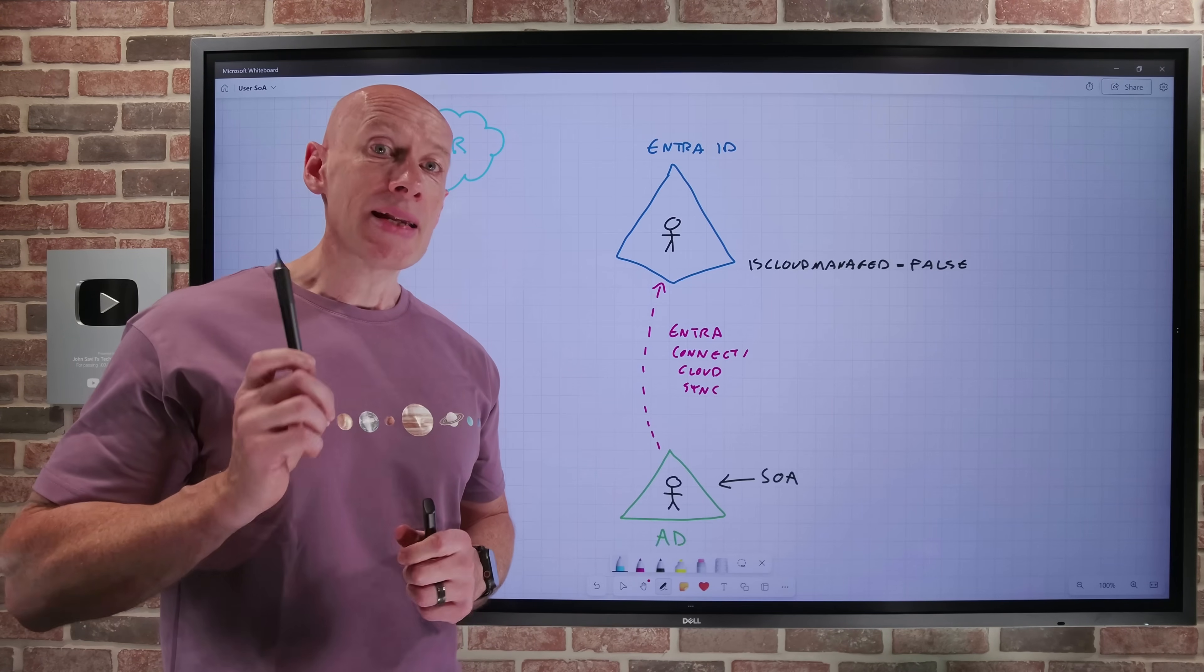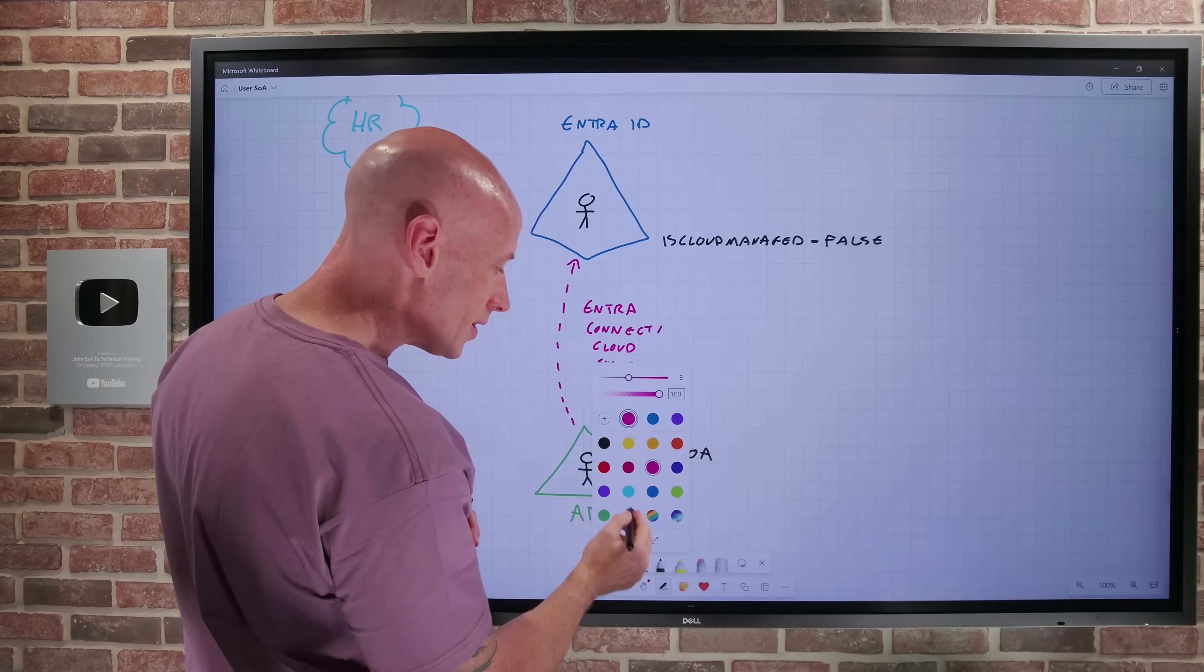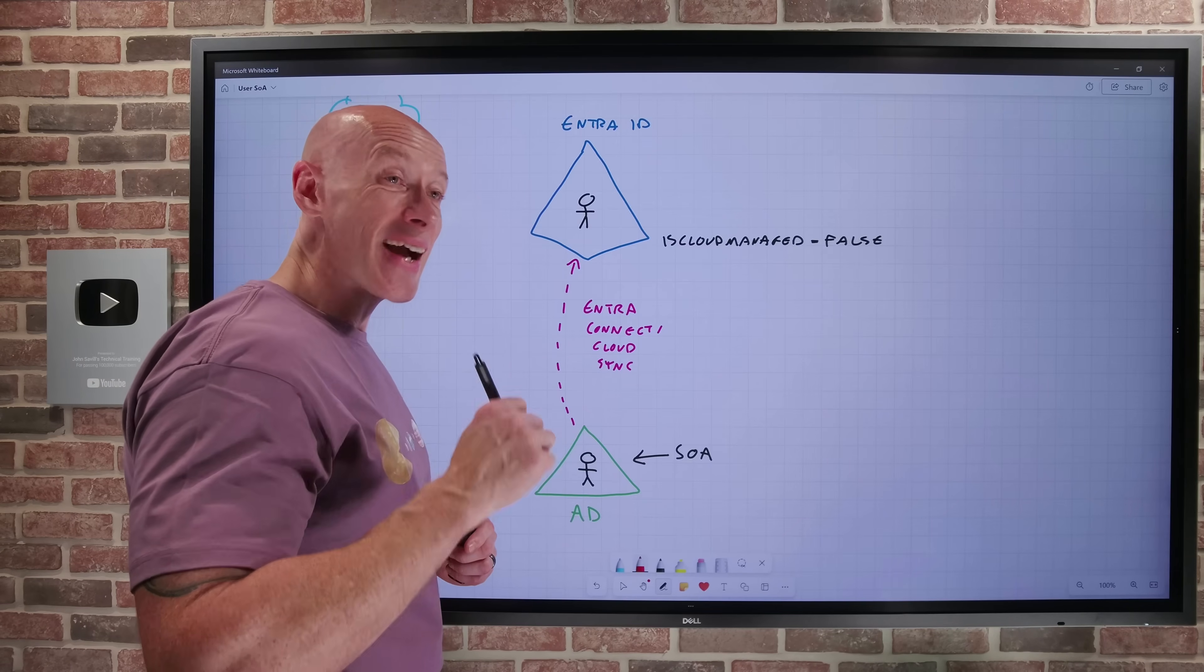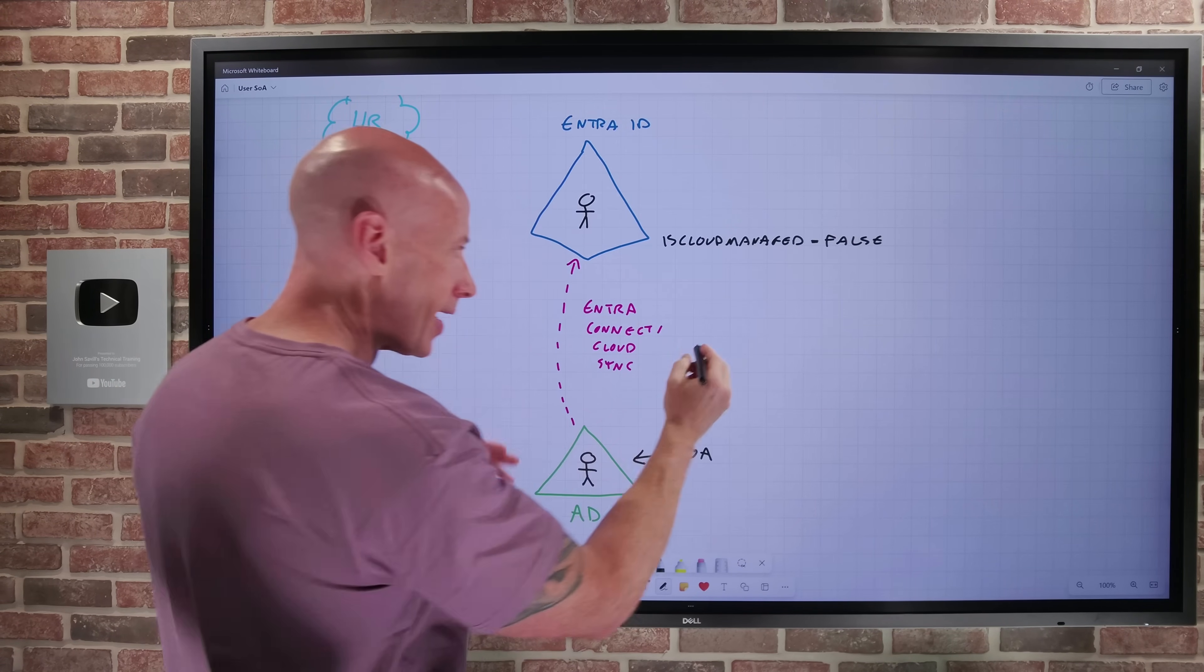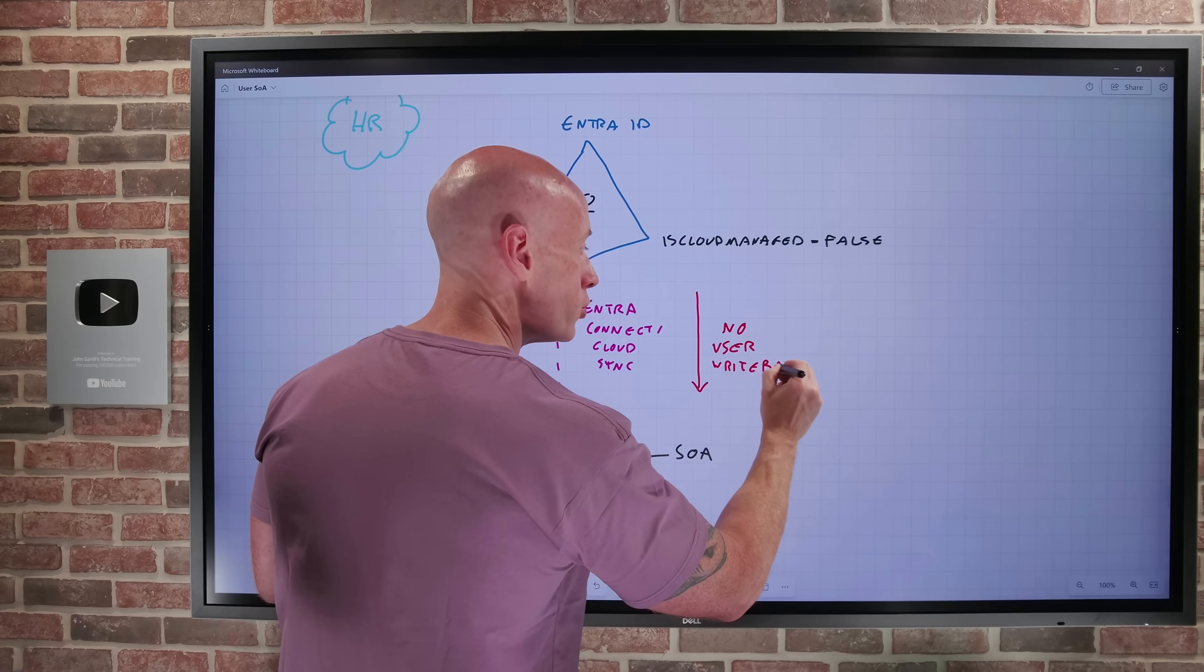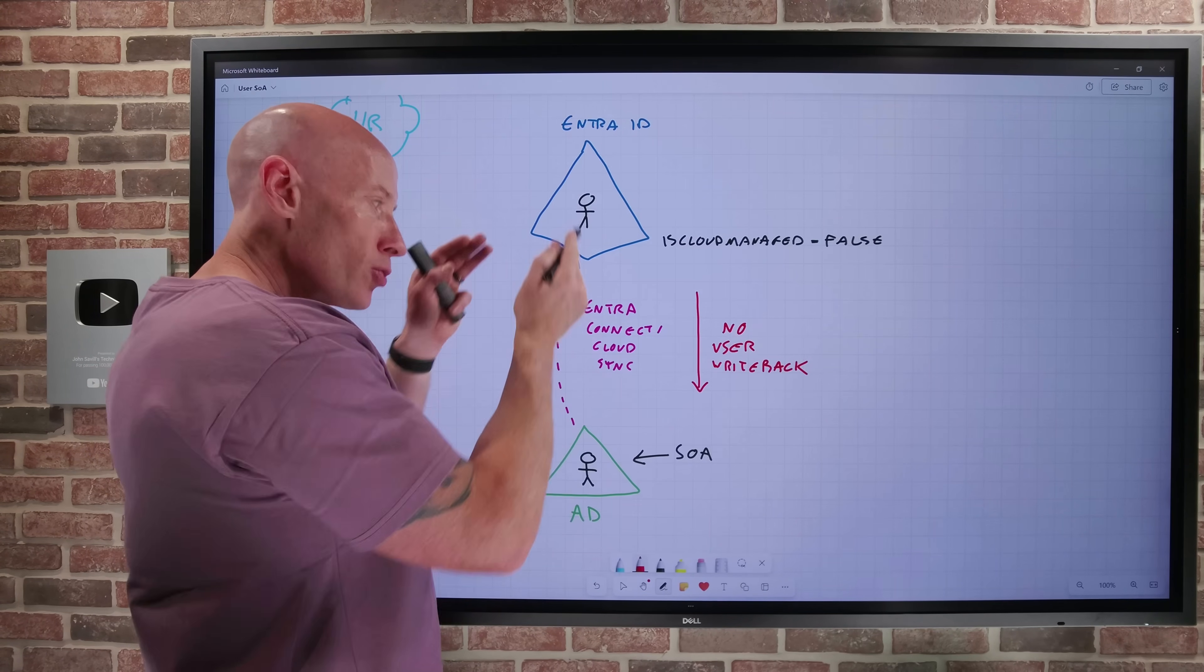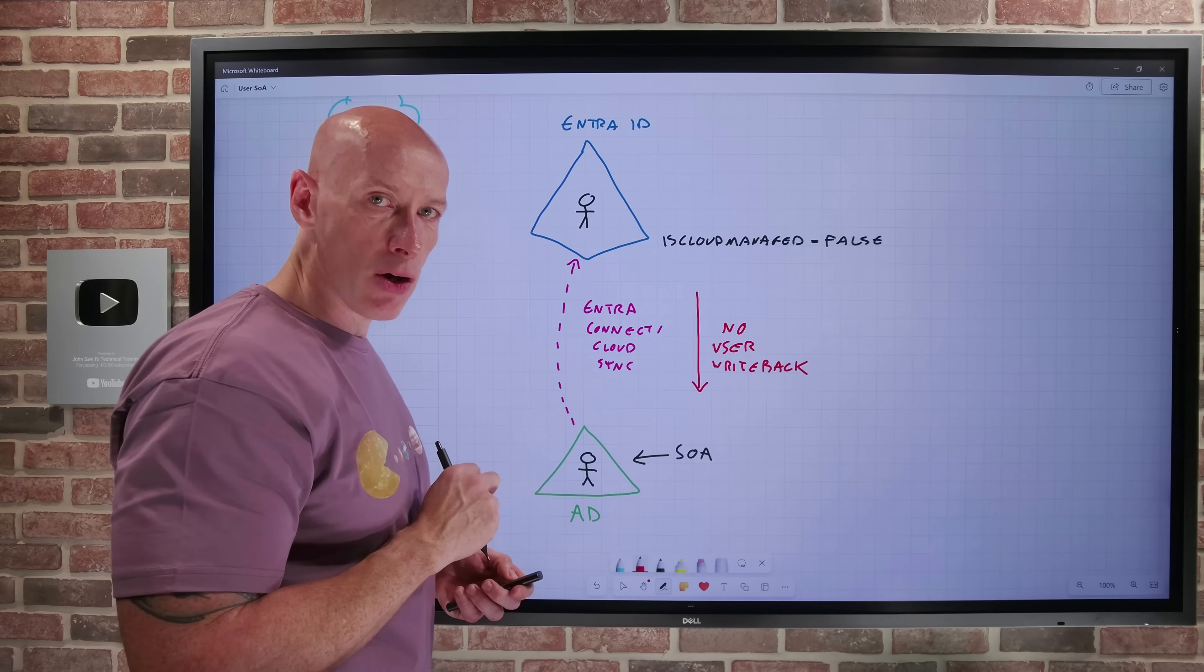One important thing to understand though, is when we go ahead and we're going to make this change, one thing that we do not get, there is no user write back today at time of recording. So this flow is that way. There is no flow today this way. So if I do choose to make this change and I start changing the attributes, those changes will not go and reflect in this user. They basically become completely cut off from one another.